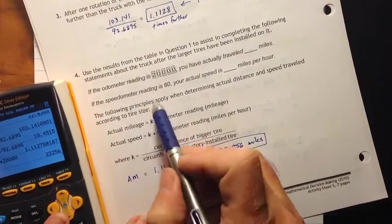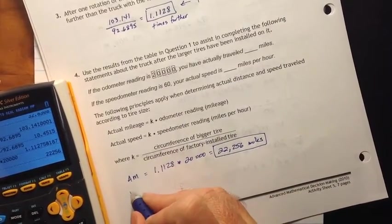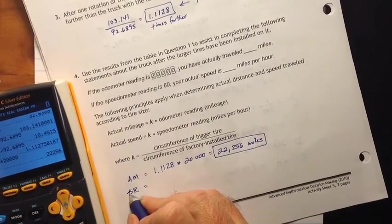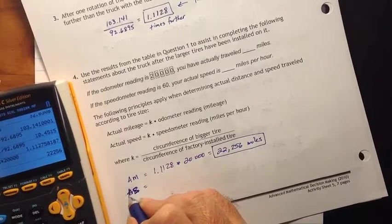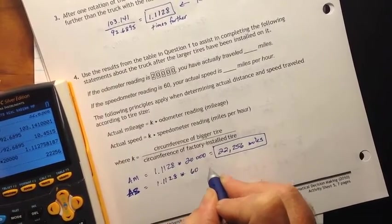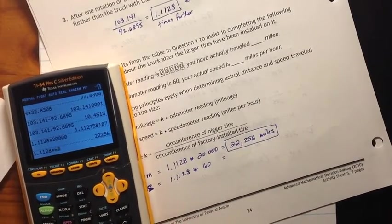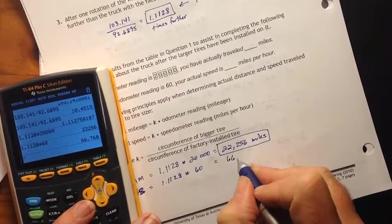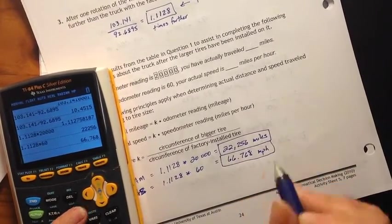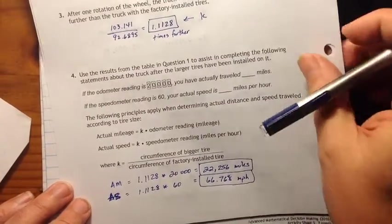Same thing with the speedometer reading. We're going to take the actual speed we're going is going to be speedometer times K. So your speedometer reading is going to be, or let's say actual speed. Let's use these letters here. Actual speed AS equals 1.1128 times 60. So if the speedometer says 60 miles per hour, then we're actually going 66.768 miles per hour. All right. A difference of almost 7 miles per hour.